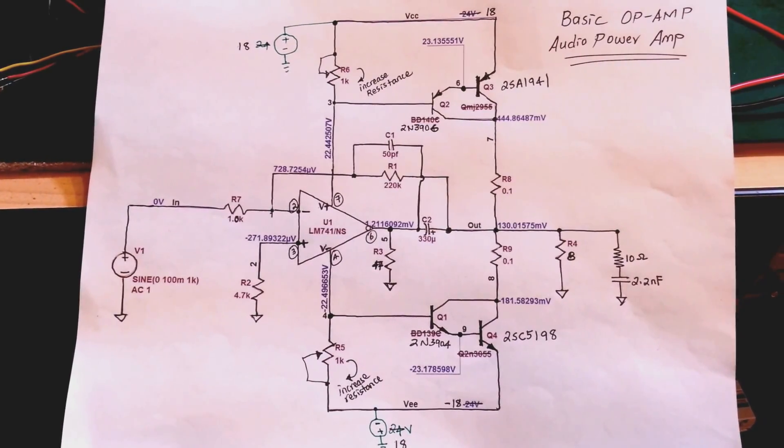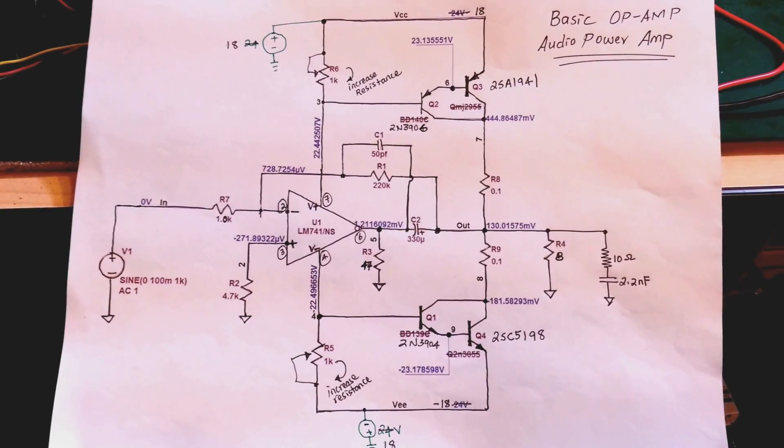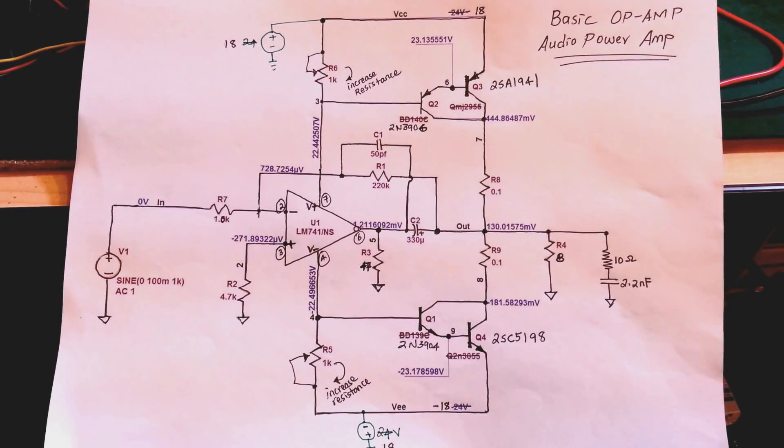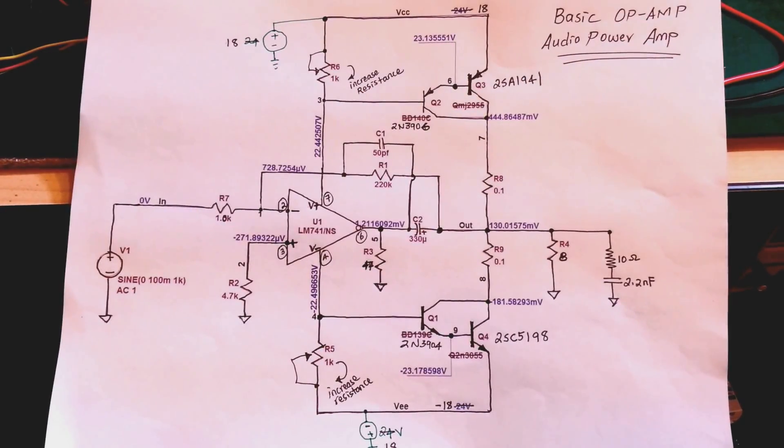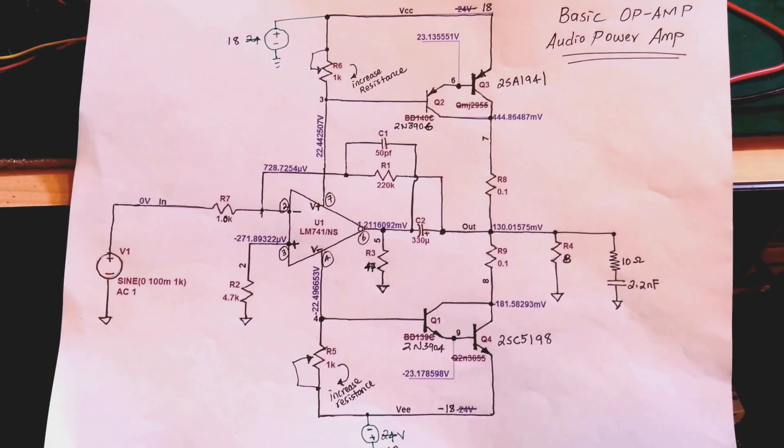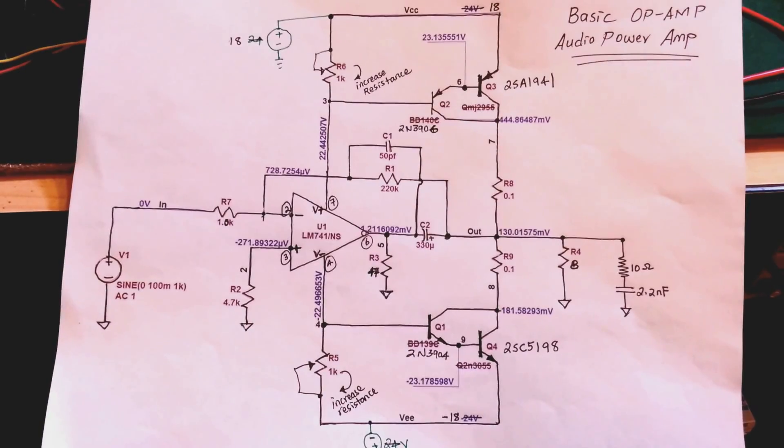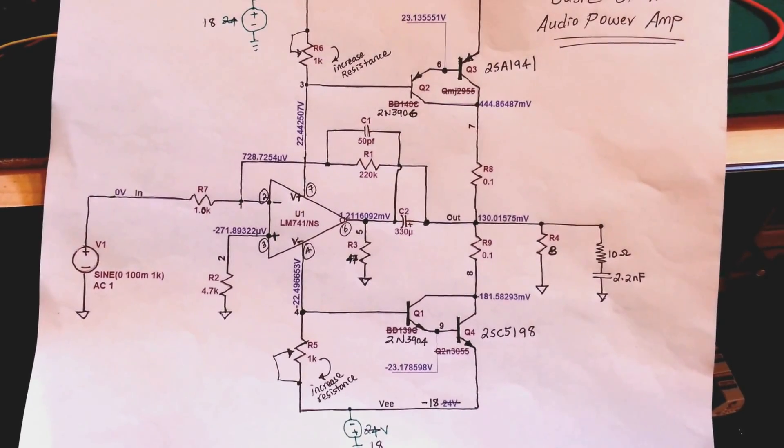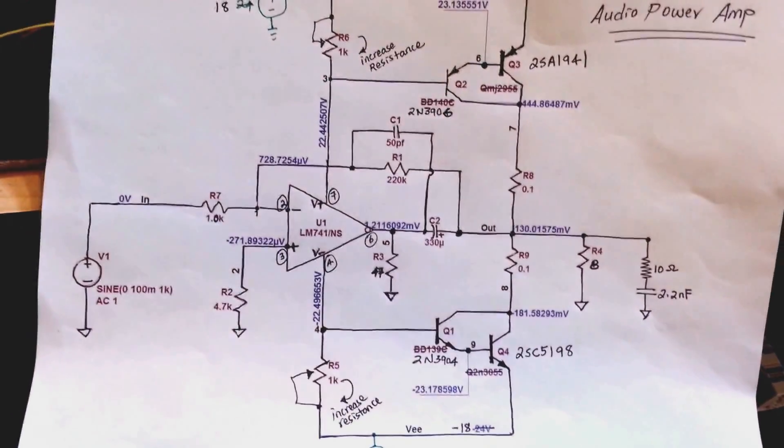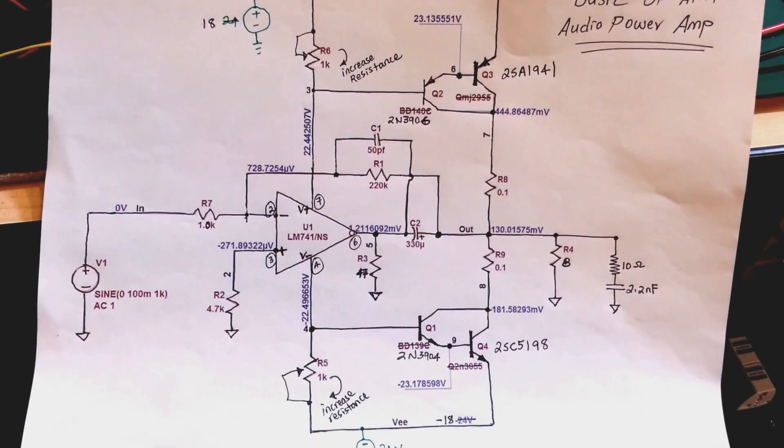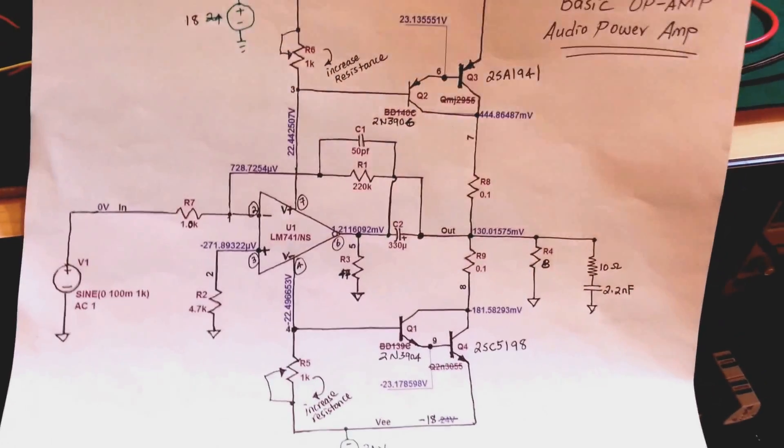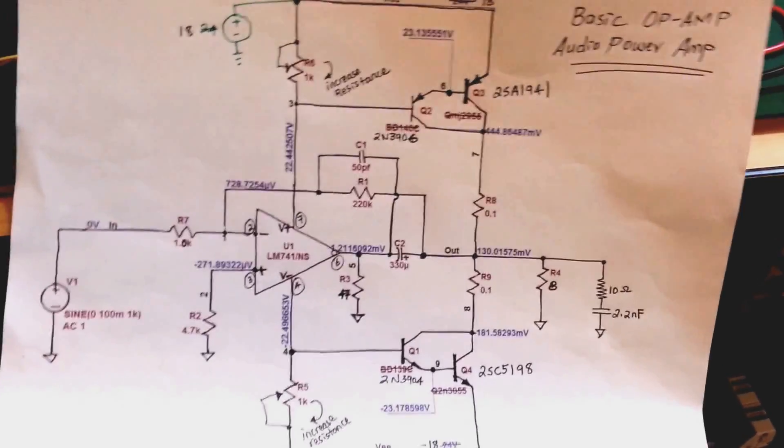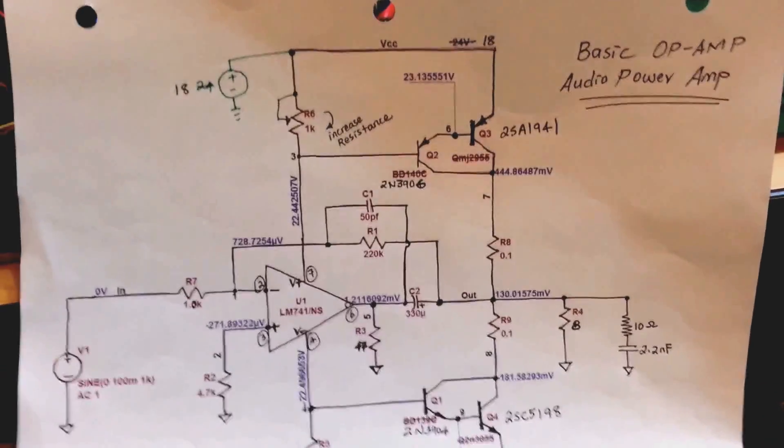As you can see in the schematic, the op-amp is configured in such a way to drive the Darlington type configuration, the PNP and the NPN Darlington type configuration to output considerable amount of power into a speaker load. And this op-amp is configured not in a traditional way, and I will explain what I mean by that. The way the Darlingtons amplify the signal, well the power to be exact, because the op-amp is used as a voltage gain stage, and the two Darlingtons are used for the power amplification stage.